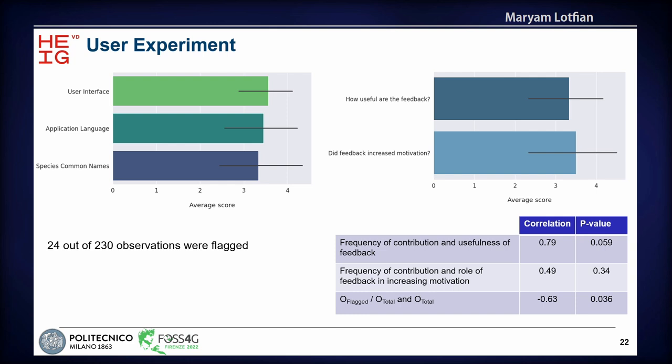As a result of the auto-filtering, only 24 observations were flagged out of 230. We also found a statistically significant negative correlation between the number of flagged observations and the total number of observations for each participant — meaning that participants who contributed more had a lower number of flagged observations. This suggests that over time people actually learned from their contributions, thus contributing higher quality data.